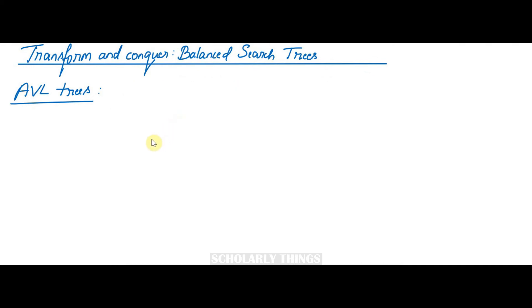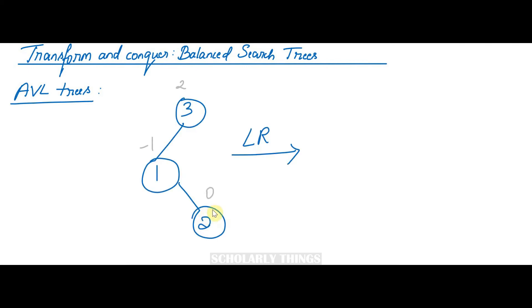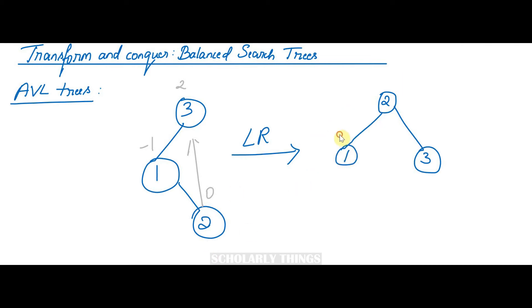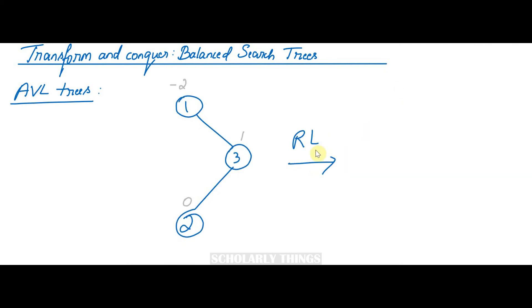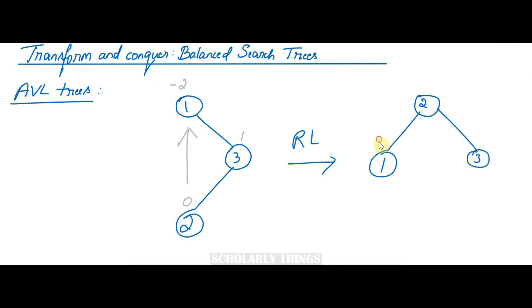A shortcut to remember: in LR rotation, the newly added node 2 goes up to become the root, 3 goes to the right, and 1 is at the left — balance factors are all 0. Similarly in RL rotation, node 2 goes up to become the root, node 1 goes to the left, and node 3 is at the right — balance factors are all 0. The AVL tree is balanced.